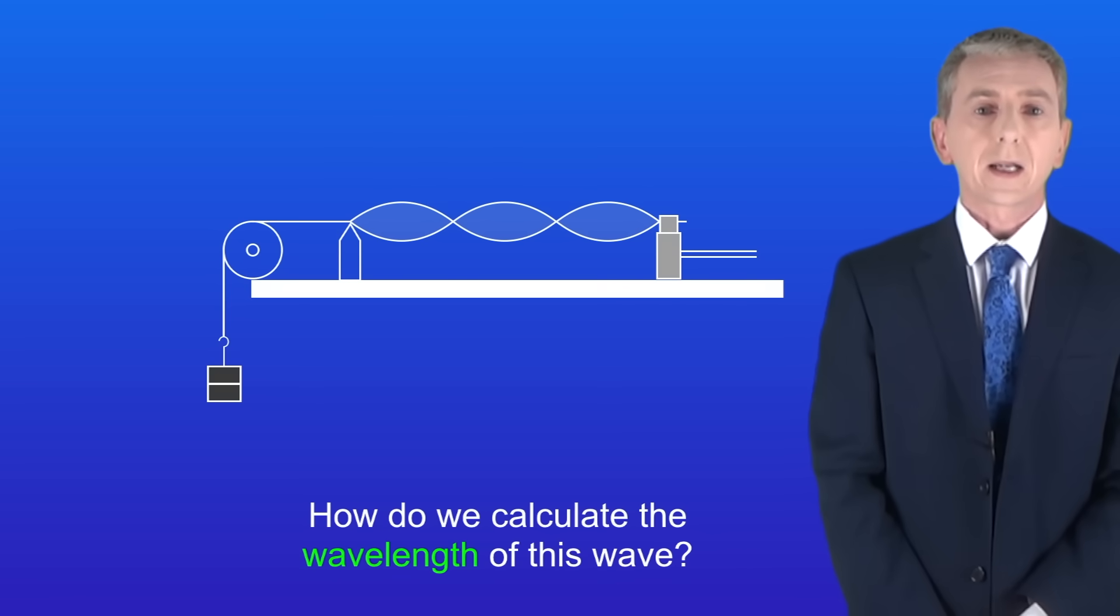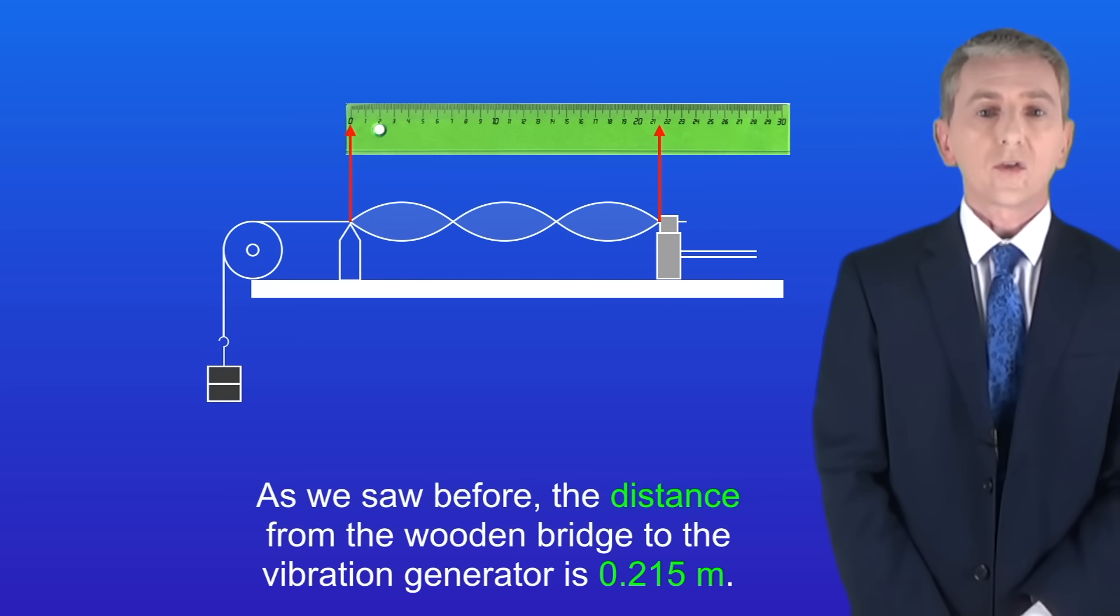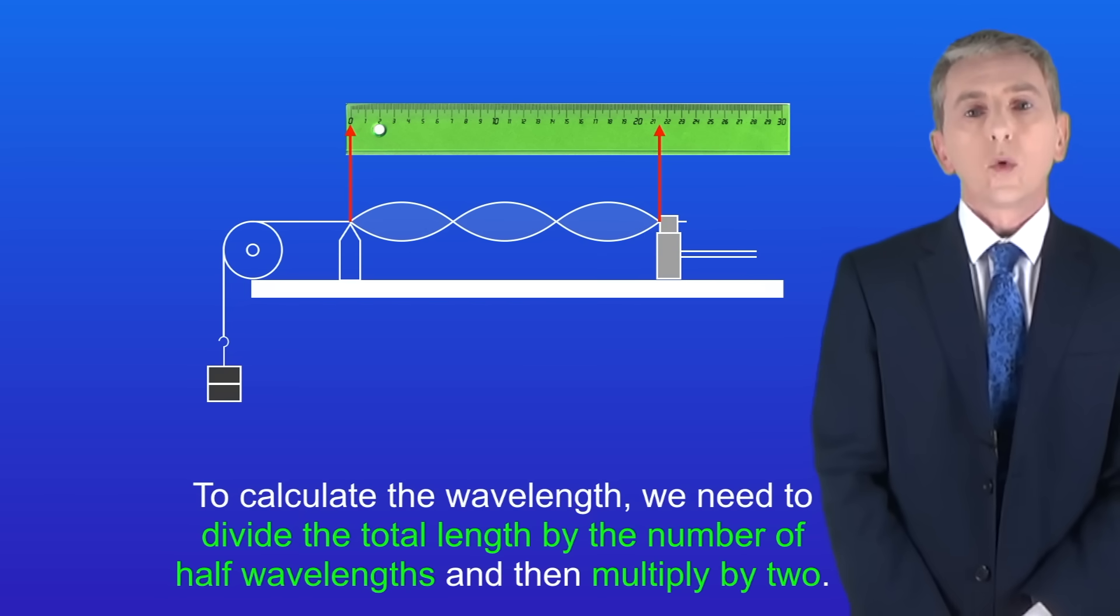So how do we calculate the wavelength of this wave? Well as we saw before the distance from the wooden bridge to the vibration generator is 0.215 meters. To calculate the wavelength we need to divide the total length by the number of half wavelengths and then multiply by 2.